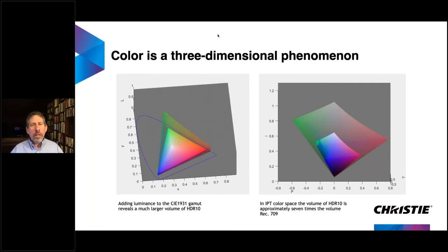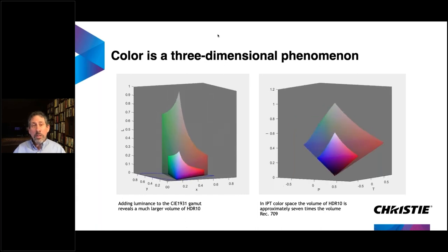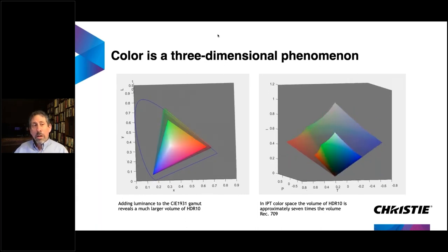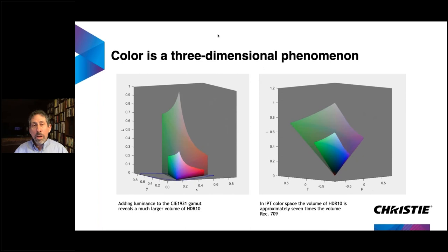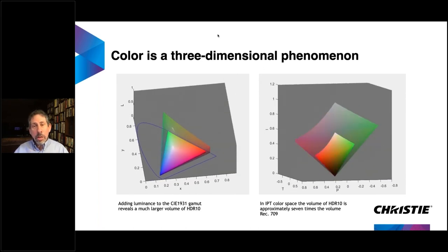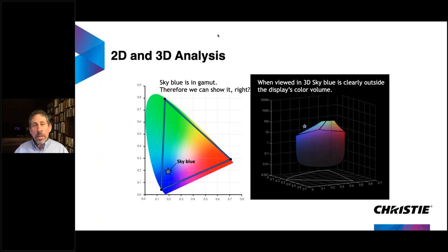Color has really been represented as a two-dimensional thing, but the reality is it's a three-dimensional volume. Depending on those colors, there's a lot more volume in color space. Even if colors overlay in two dimensions, in three dimensions you can discover colors you may not be able to hit simultaneously. Sky blue may sit clearly within the 2D triangle, but with insufficient color volume it may render as gray. With more color volume, you can represent a lot more.